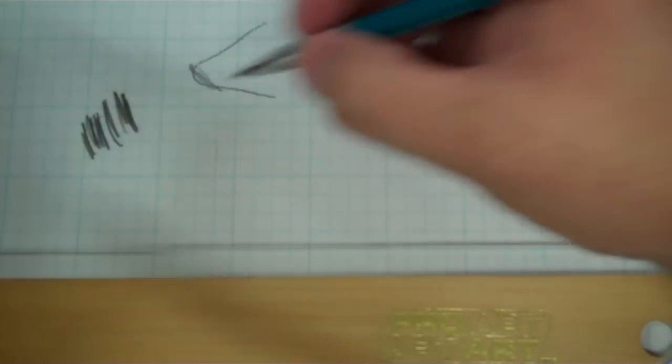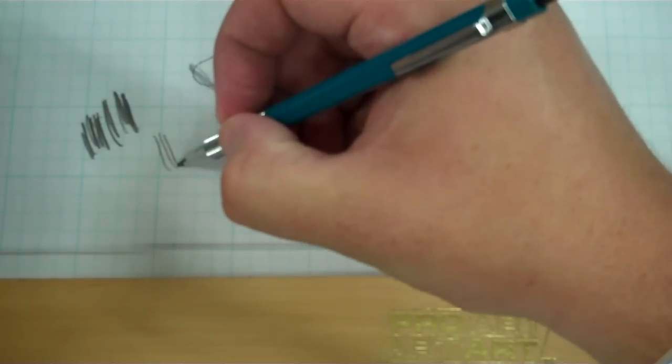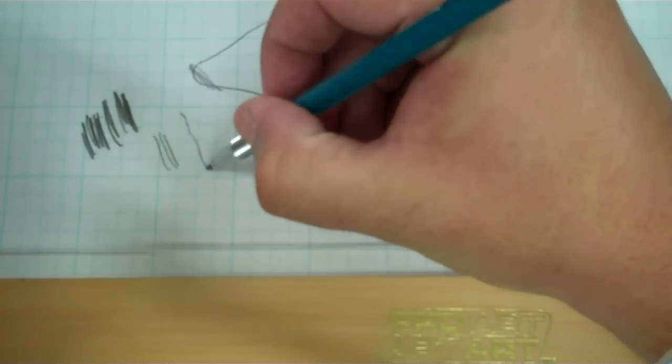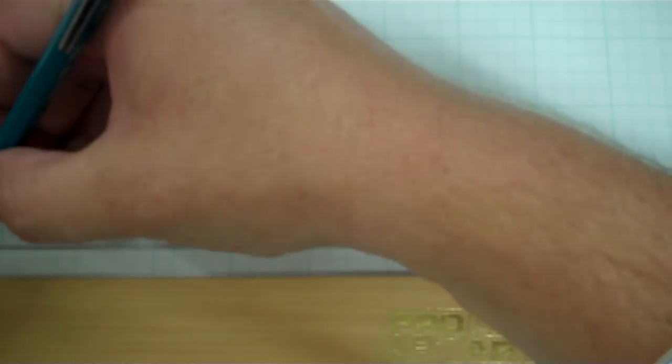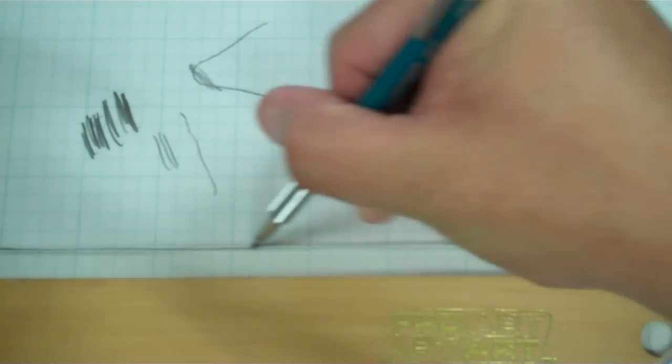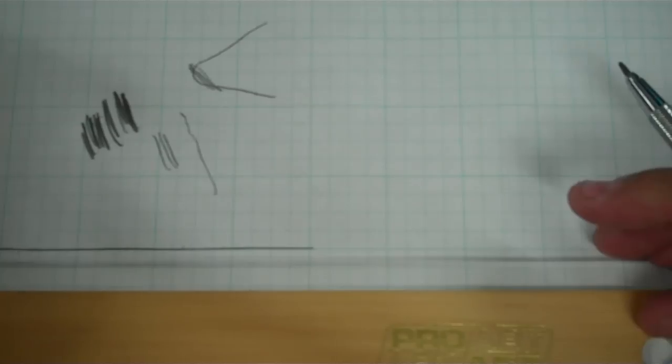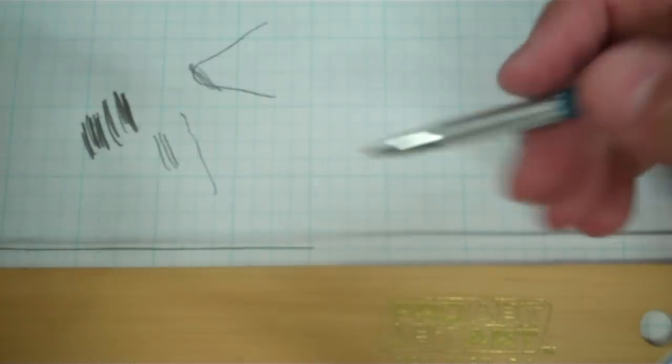So what we want to do is instead of drawing like this, we want to draw and roll the pencil. So here's an example along the straight edge. If I roll it, I get a nice kind of consistent line rather than one that kind of starts out sharp and then fades away.